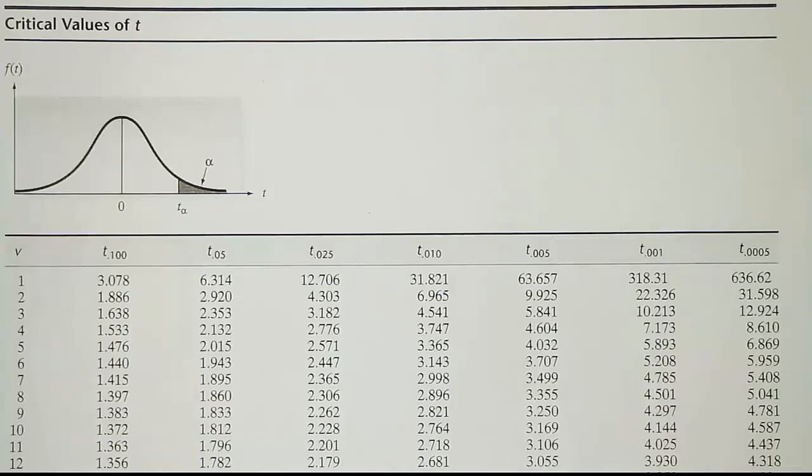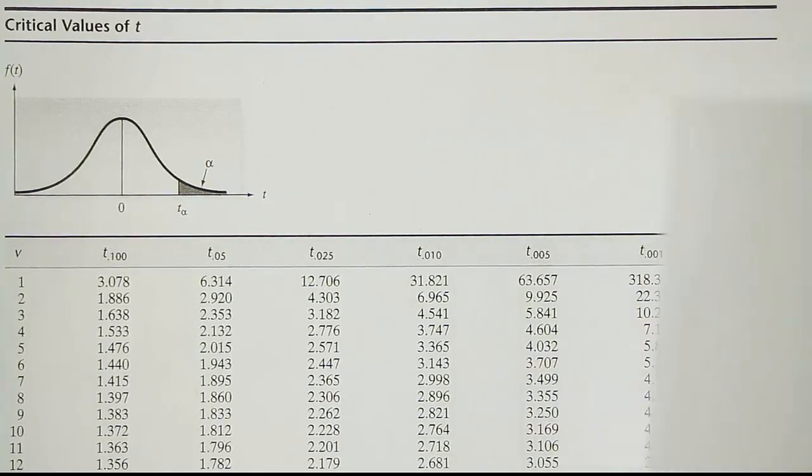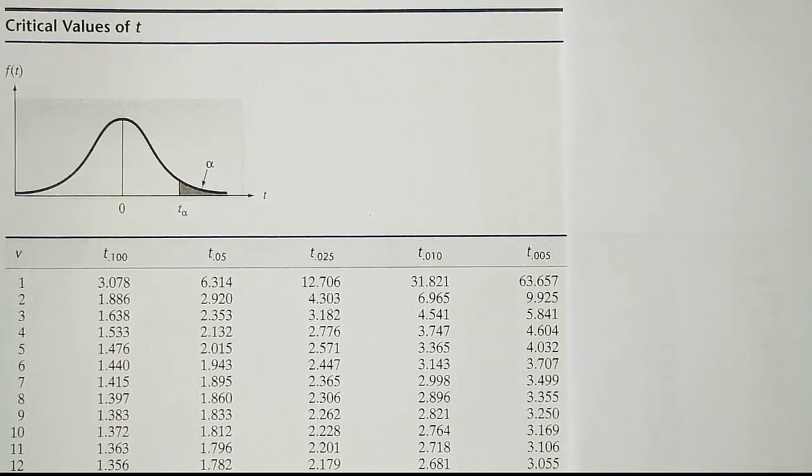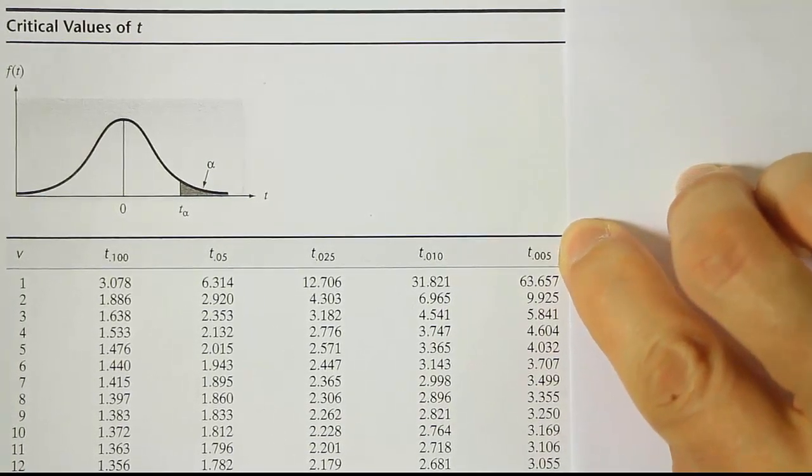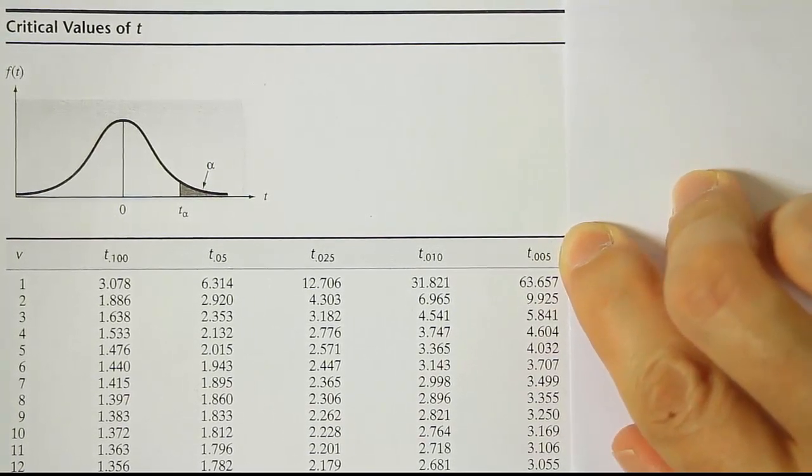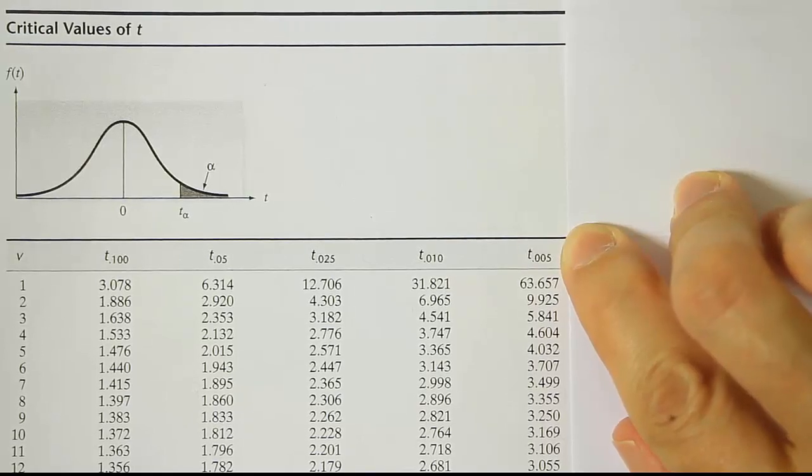So look up 0.005 on the t-table under infinity. Under the infinity, or the last row of the t-table, depending on what t-table you're working with, you have z-values. So we're going to look up this 0.005 on our t-table, and we should be able to find our z alpha divided by 2.